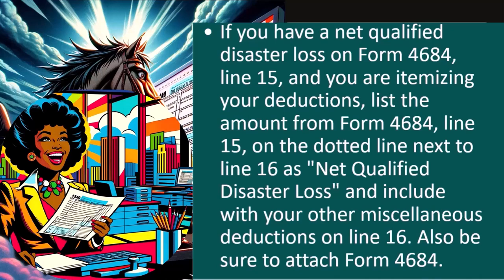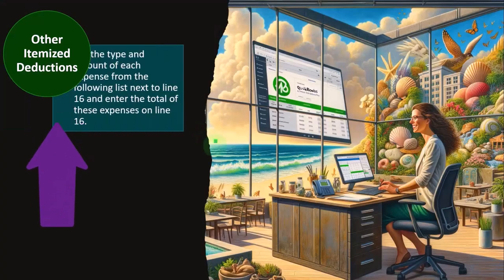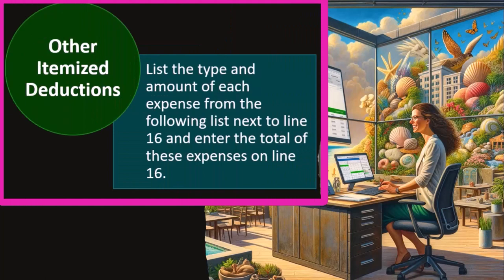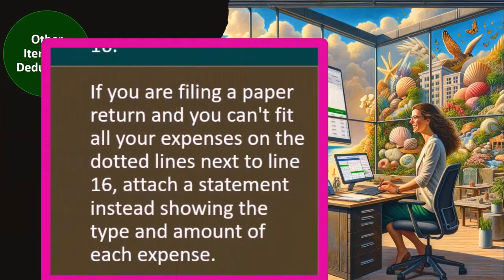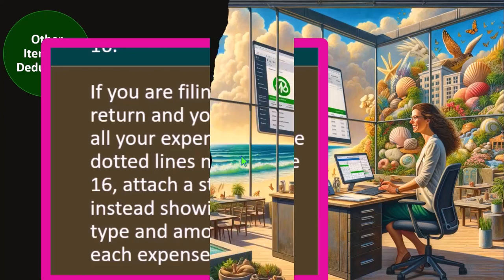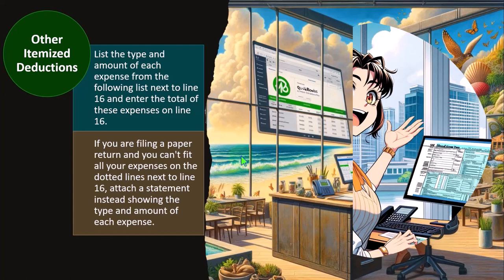It's when you're not itemizing that the question becomes: how can the tax system be set up so you could still get a benefit for the qualified disaster losses, even if you don't own a home or don't own one in a high cost-of-living area? For other itemized deductions generally, list the type and amount of each expense next to Line 16 and enter the total on Line 16. If filing a paper return and you can't fit all expenses on the dotted lines, attach a statement showing the type and amount of each expense. Most people use electronic software these days, which allows you to add a longer list or attach a statement.